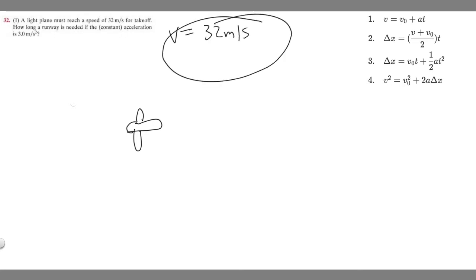So we're given final velocity, what else are we given? We know the plane has to reach 32 meters per second to take off, but when the plane starts we know its velocity is zero because when something's not moving its velocity is zero. So we know that its initial velocity v sub zero is going to be zero meters per second.